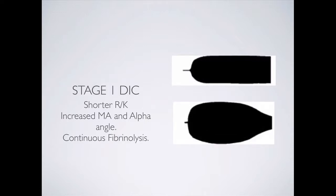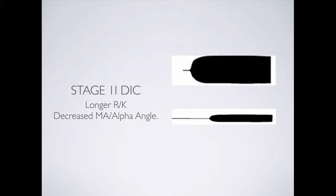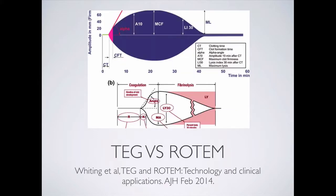In DIC, we get the same hypercoagulable curve but it tapers down at the end, similar to the fibrinolysis diagram. This is in the first stage of DIC — the classically described hypercoagulable state — with an increased maximal amplitude, shorter R and K times, and increased alpha angle, but then constant fibrinolysis towards the end of the curve. In stage 2 DIC you have a smaller maximum amplitude that takes longer to reach, with a longer K and a decreased alpha angle. It corrects well with cryo and tranexamic acid.